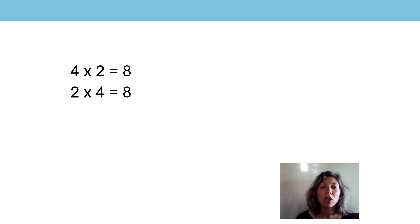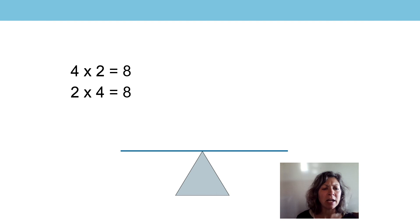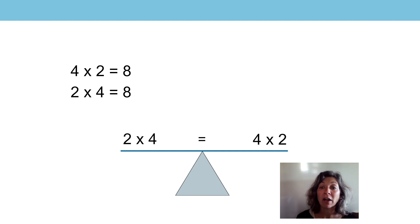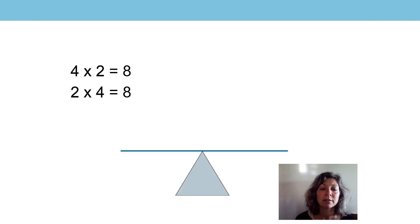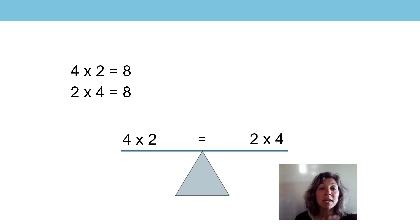Let's have a look at another one together. Four twos are eight. Two four times is eight. Does it matter which side of the balance we write the expression on? That's right, it doesn't matter because they are equivalent. Two four times is equal to four twos. Four twos is equal to two four times.